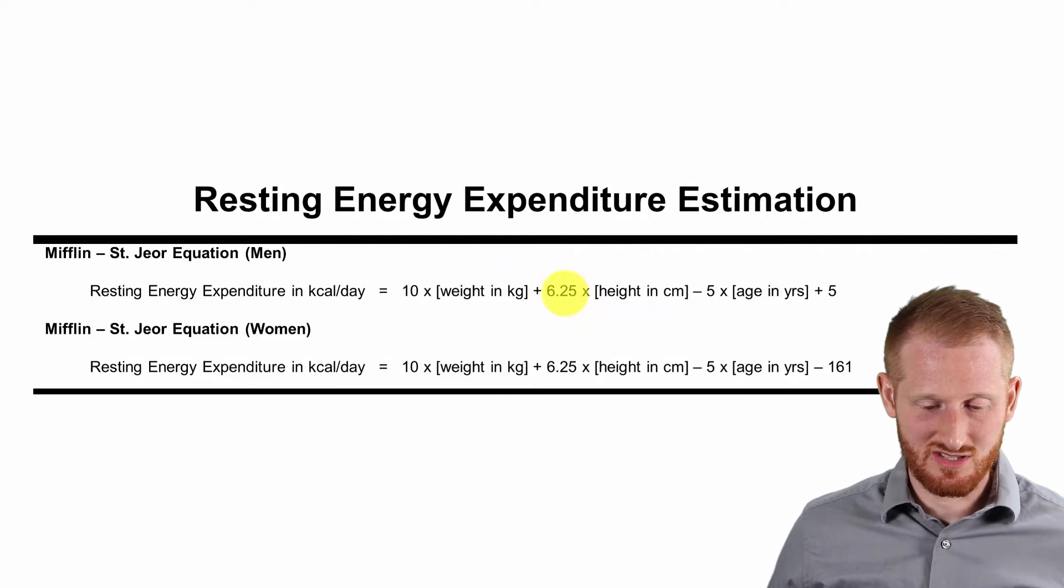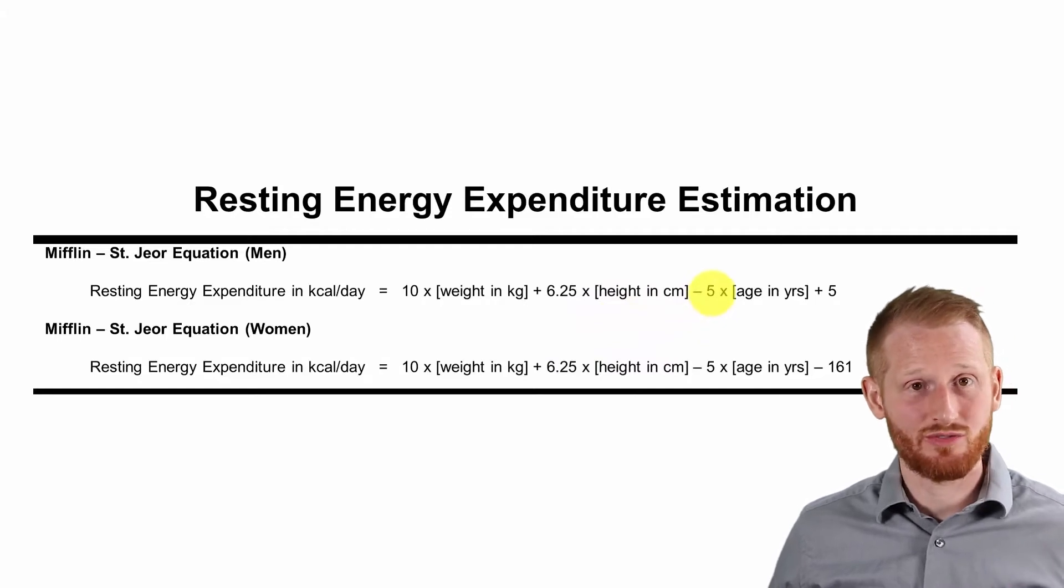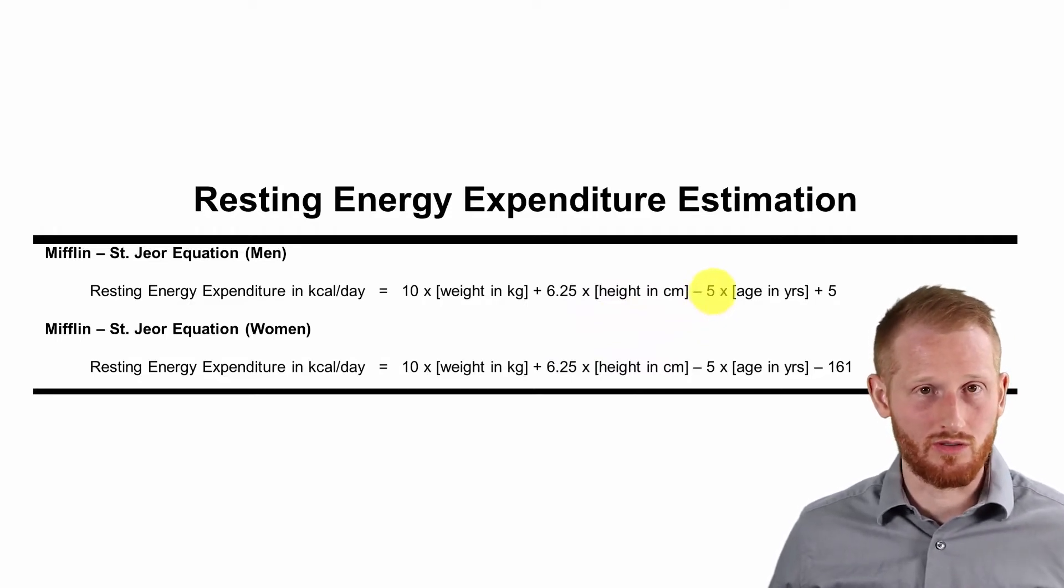Then the height factor, which is 6.25 times the height of the individual. And then it's going to subtract out. Basically the older you are, the lower the caloric intake typically is. So it's going to subtract out the age factor, which is 5 times the age of the person.